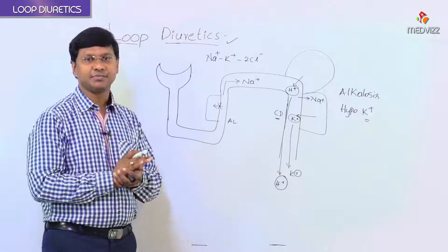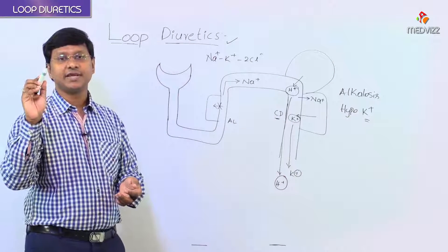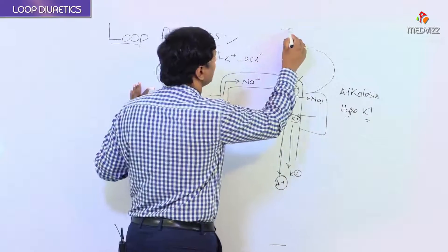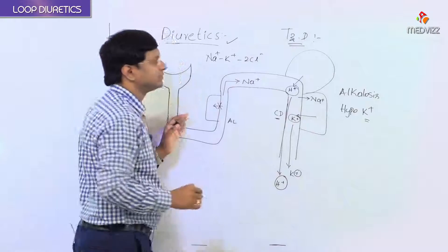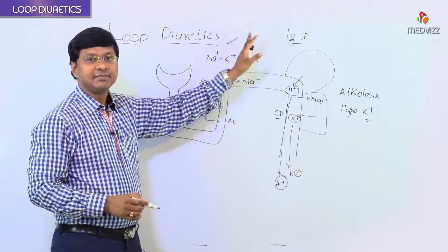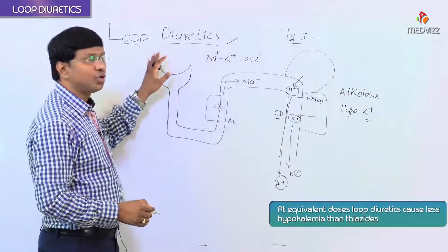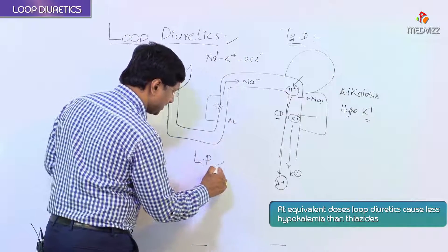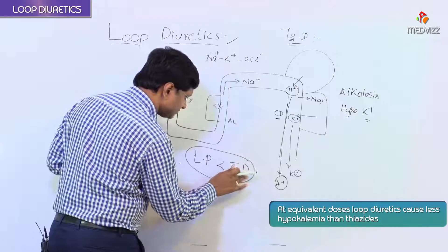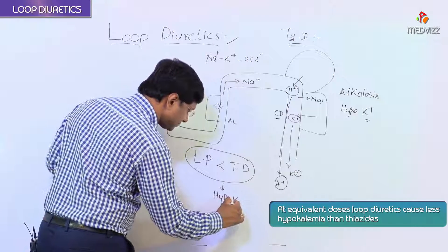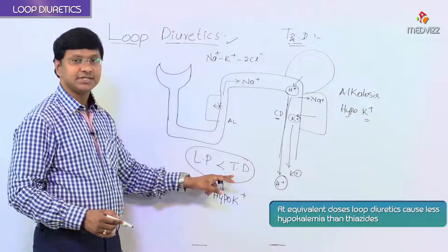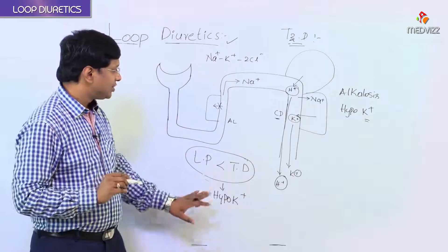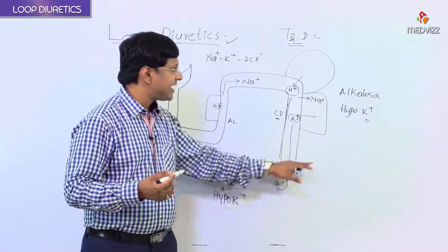Comparing loop diuretics and thiazide diuretics: both cause hypokalemia, but at equivalent doses, loop diuretics cause less hypokalemia than thiazide diuretics. So thiazide diuretics cause more hypokalemia compared to loop diuretics at equivalent doses. This is how loop diuretics cause hypokalemia and alkalosis.